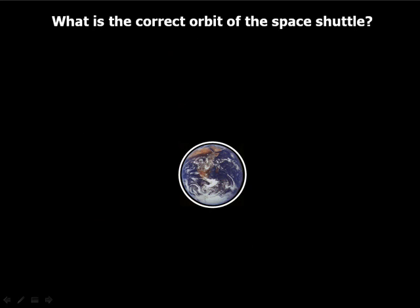If you said the white one, you'd be correct. The space shuttle doesn't go that far from home, only about 400 miles above the surface of the Earth.